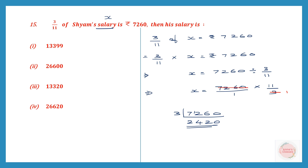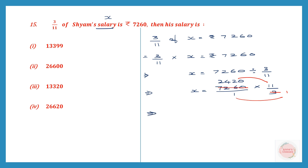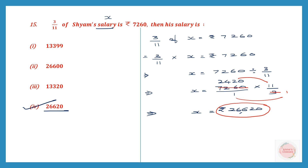After canceling, we multiply 2420 by 11. The answer is Rs. 26,620. This is option 4, and 26,620 is Shyam's salary.